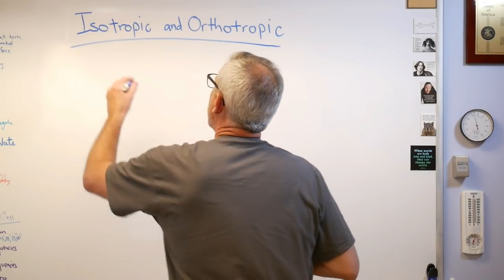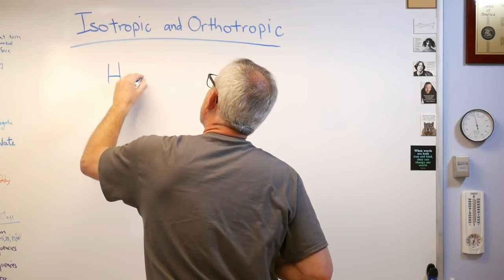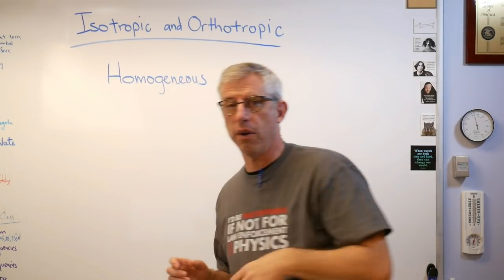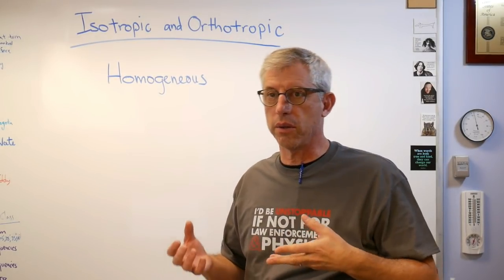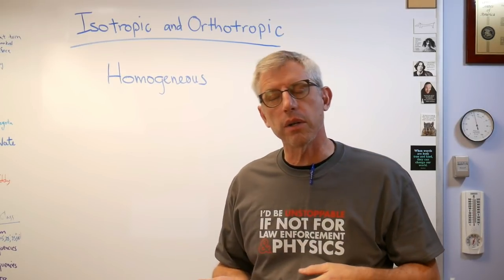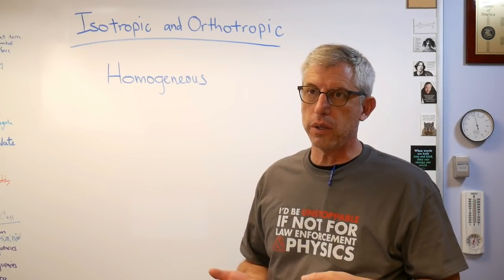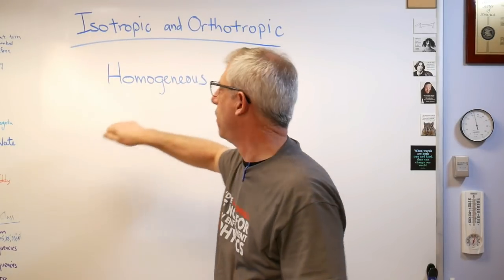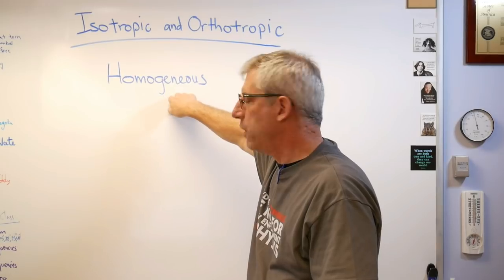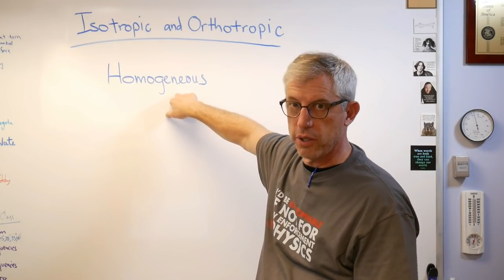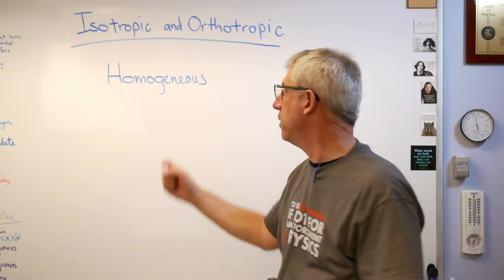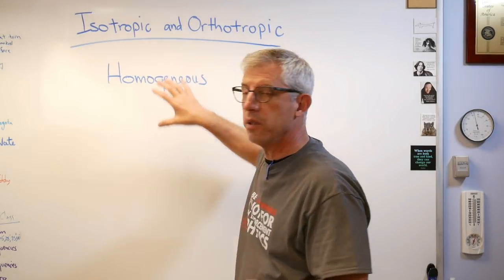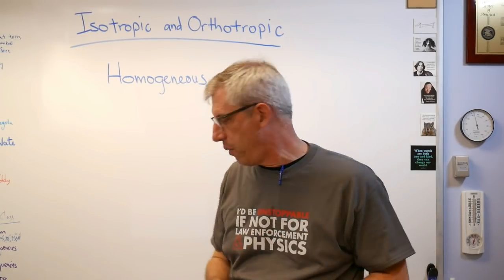Let's start with homogeneous. Before you can write an equation to describe the behavior of some object — like a beam, plate, or cylinder — you have to know something about the materials. In Strength of Materials we typically assume it's made out of metal, and we assume metal is homogeneous and isotropic. Now, homogeneous — if you're not talking about engineering it's pronounced 'homogeneous,' but in engineering every class and every engineer I've talked to says 'homogeneous.' So homogeneous means a material that's the same everywhere.